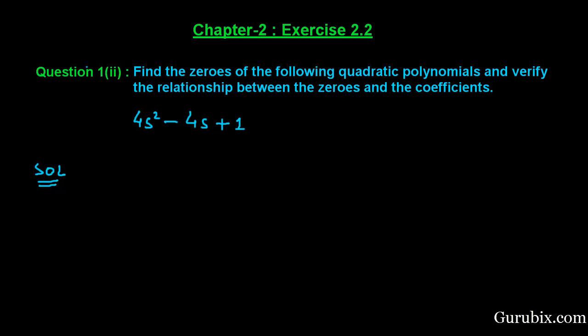Welcome friends. Let us solve the second part of question number one of exercise 2.2 of chapter 2. The question is: find the zeros of the following quadratic polynomial and verify the relationship between the zeros and the coefficients. Let us see how to solve this question. First of all, we shall collect the given polynomial.